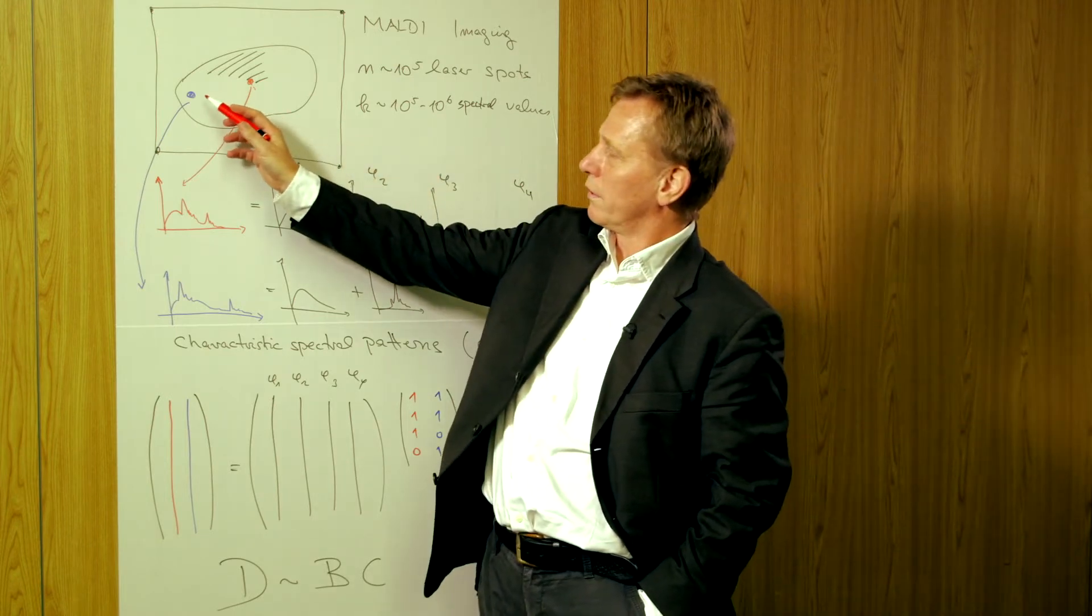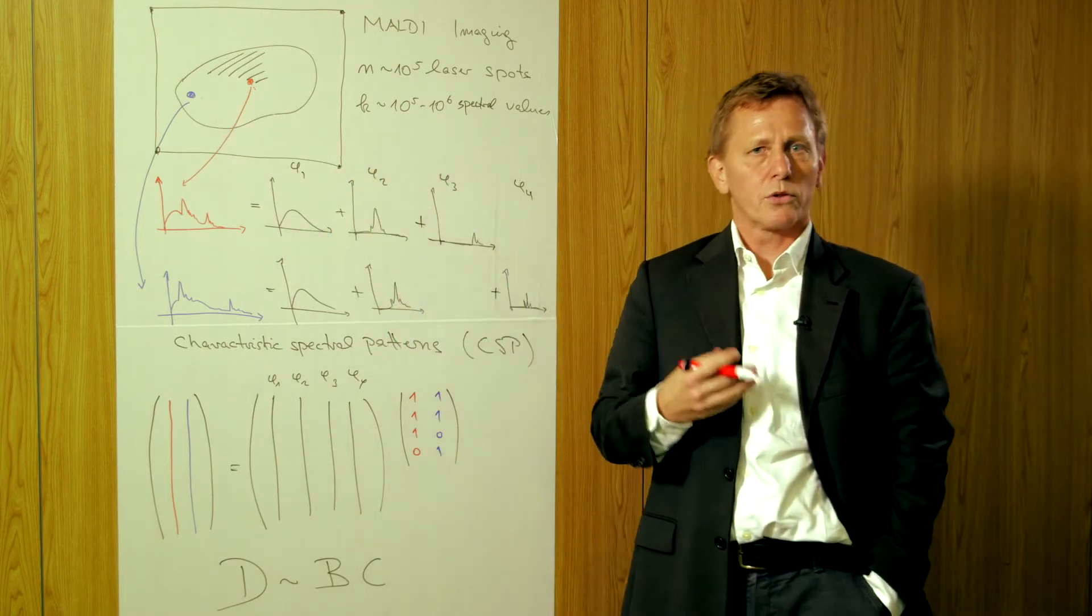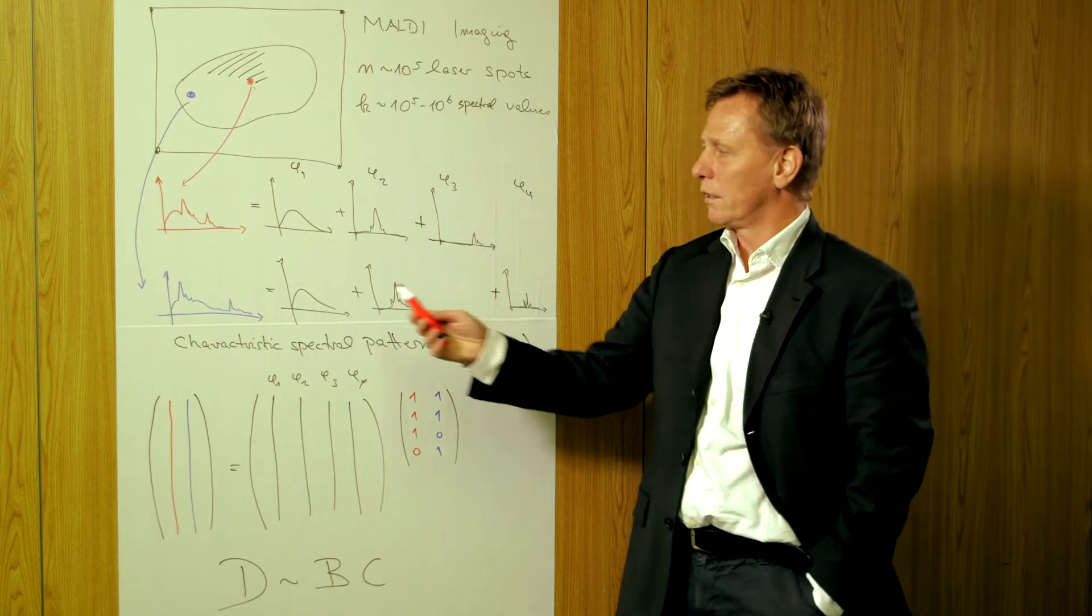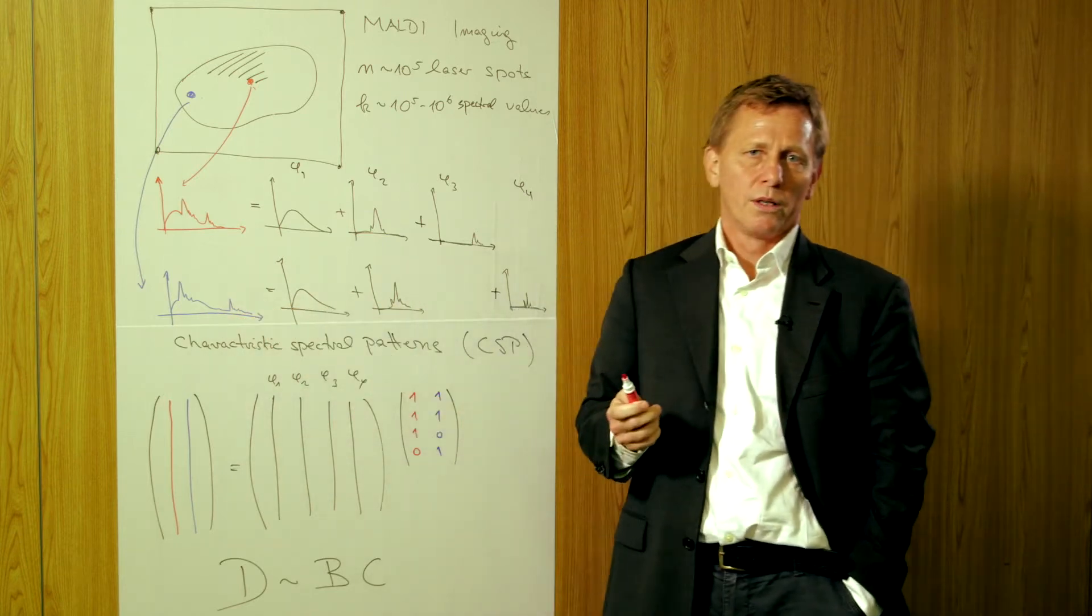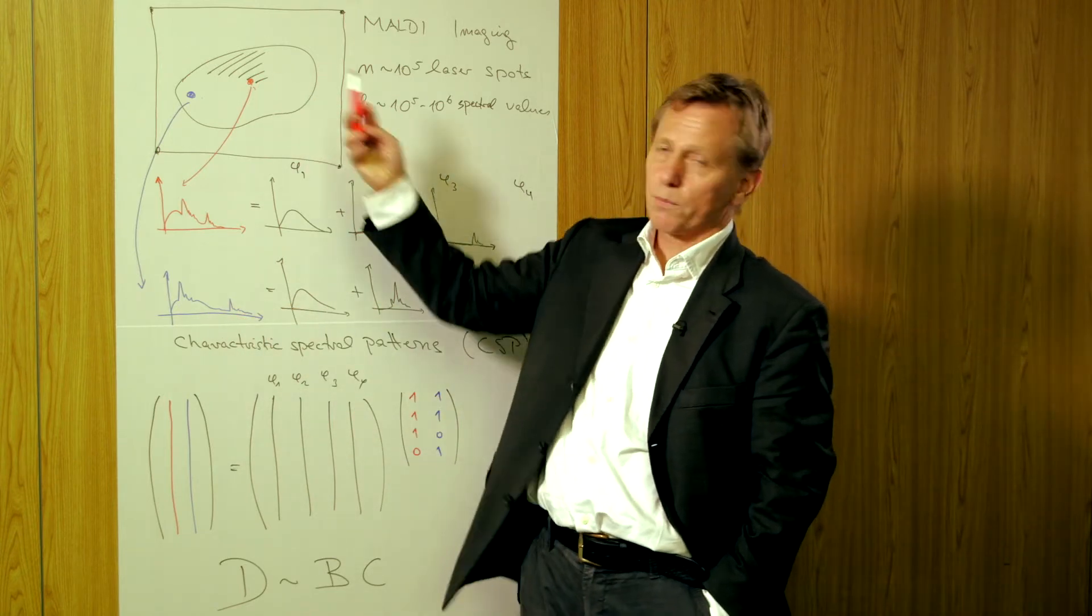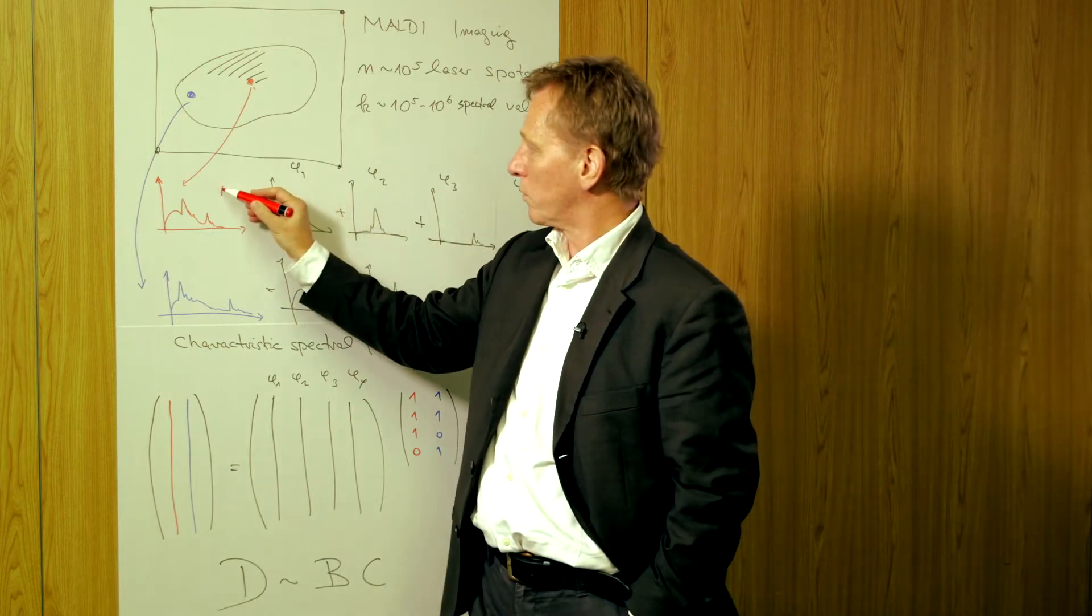If the laser hits at the blue point, it evaporates some material which is fed into a mass spectrometer, yielding a spectrum here depicted in blue. If you now probe the tissue slice at the red spot, which is assumed to be part of the tumor region, you get a slightly different spectrum.